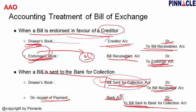In all cases where the drawer is doing something with the bill, there is no entry in the drawee's books. The drawee is only concerned with the payment. So when payment is made, Bill Payable Account is debited and Cash Account is credited in the drawee's books.